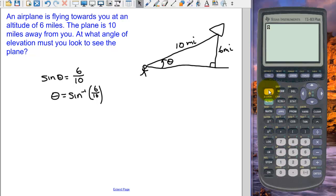So we have now second sine inverse of 6 tenths, and we could have simplified that fraction if we wanted to. And we get approximately 37 degrees, so our angle of elevation is approximately 37 degrees.